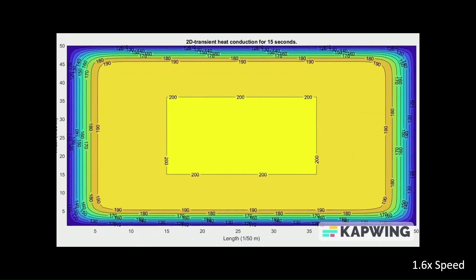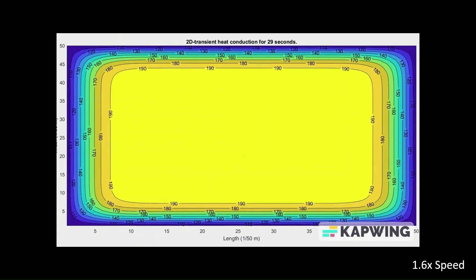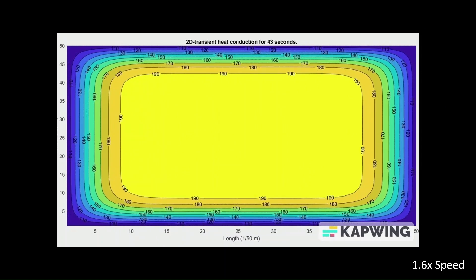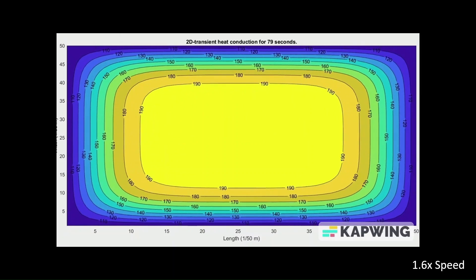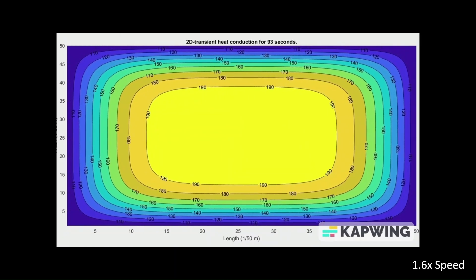The slab cools down near the edges first, as the center gradually reduces in temperature. This is nearly identical to putting a warm drink in a cooler full of ice. The outer edge of the can will cool down first, and the warm liquid in the center will follow.